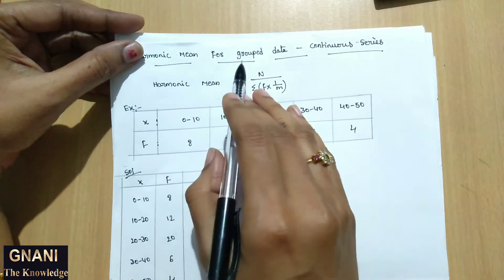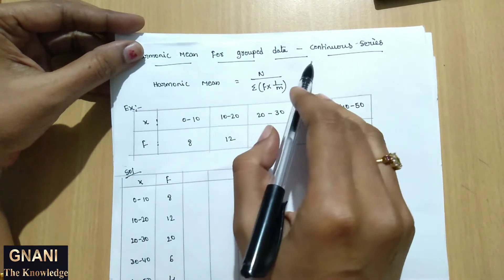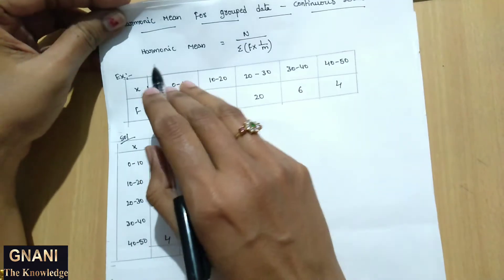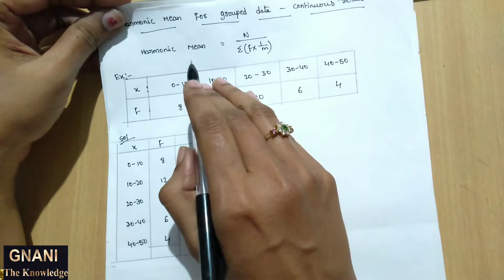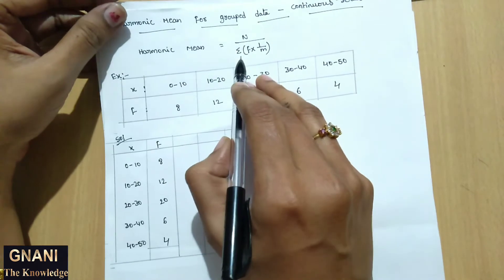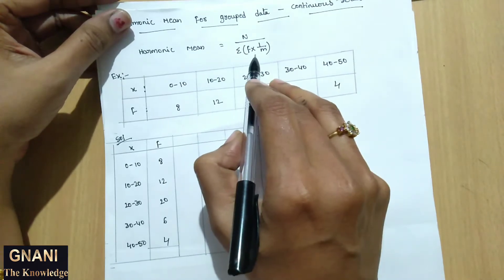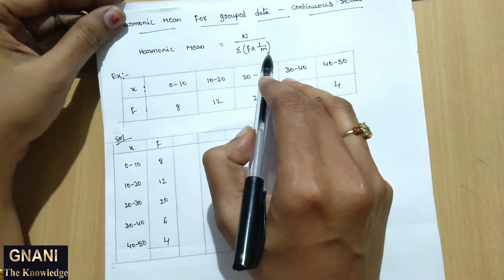Harmonic mean for grouped data continuous series. What is the formula? Harmonic mean equal to N divided by summation of f into 1 by m.